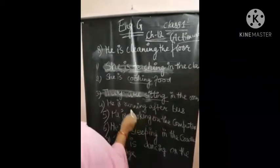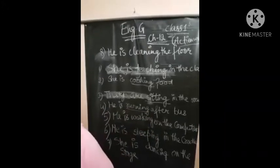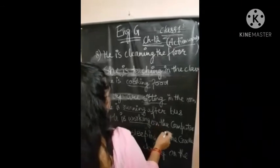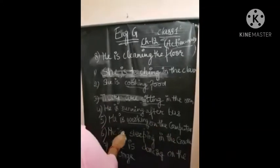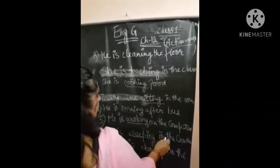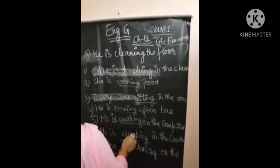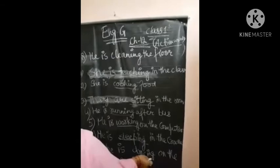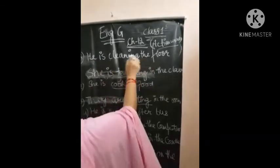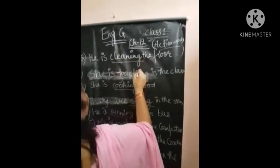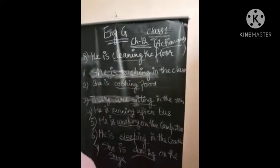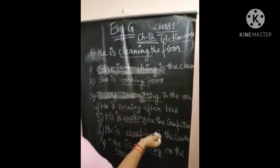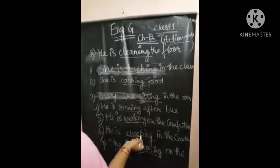He is running after the bus — running is the action word. He is working on the computer — working is the action word. He is sleeping in the cradle — sleeping is the action. She is dancing on the stage — dancing. He is cleaning the floor — cleaning. These are different actions being done by different people, different men or women.